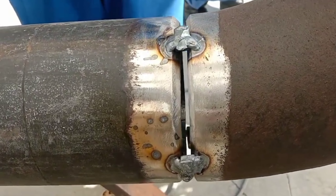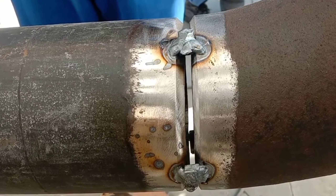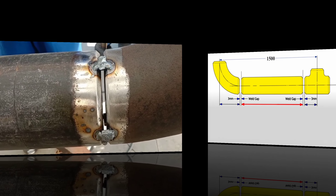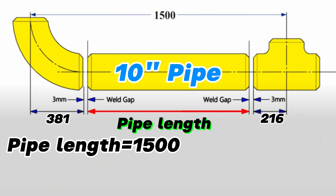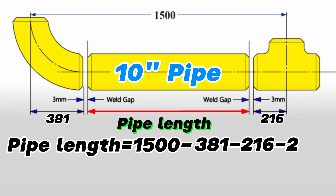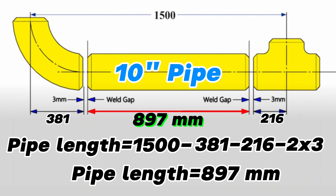Accordingly, we can easily calculate the length of the pipe segment between the 90-degree elbow and equal tee. Pipe length equals: total length 1500 millimeters, minus the 10-inch 90-degree butt weld elbow dimension 381 millimeters, minus the 10-inch butt weld equal tee dimension 216 millimeters, minus 2 times the welding gap of 3 millimeters. We calculate and find the length of the pipe piece on this 10-inch pipeline is 897 millimeters. By using this method, you can easily calculate distances between pipe fittings in any pipeline.